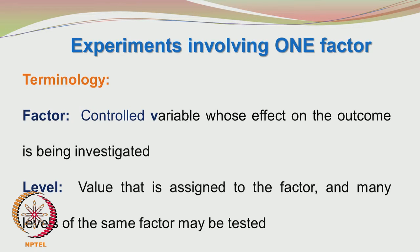The factor is a controlled variable whose effect on the outcome is being investigated. Level is the value assigned to the factor, and many levels of the same factor may be tested. For example, if we want to study the effect of temperature on the yield in a chemical reaction, the factor is temperature. The levels of this factor can be different temperatures: 30°C, 50°C, 100°C, and so on. So we can have several levels of the same factor.